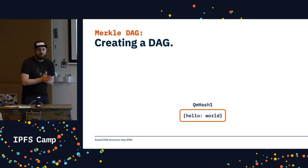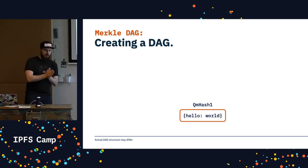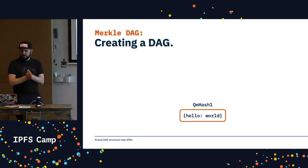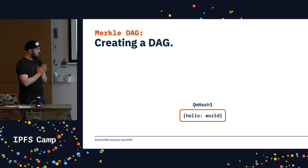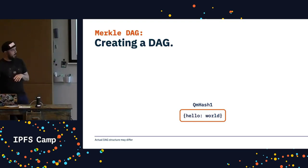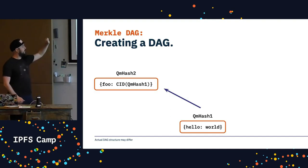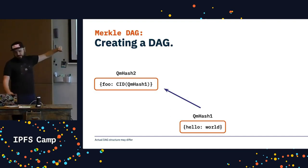So let's build a DAG. One interesting thing about building hash-based data structures is that you have to build them backwards, so get used to writing recursive functions. We're going to start here with a hello world object, which is the leaf node. We're going to get a hash of that — the hash is QM hash 1. Now we build the first branch to that leaf node, which is an object with a property of foo that points at this leaf node. That's going to get QM hash 2.